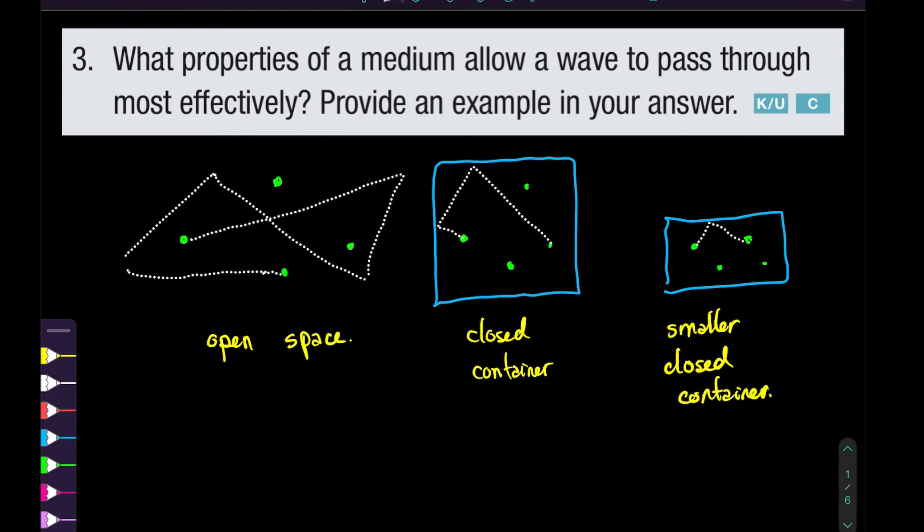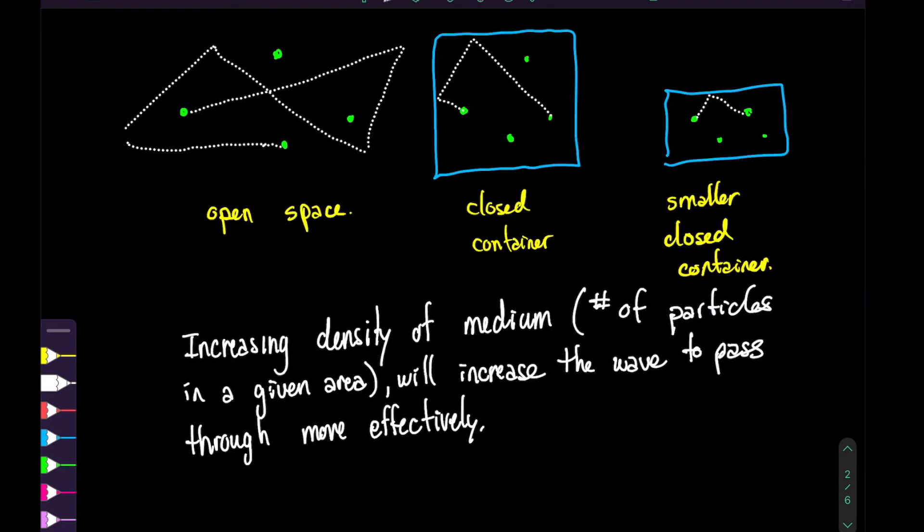One way to remember this is density, or the number of particles in a given area. If we increase the density of the medium, which is the number of particles in a given area, this will increase the wave to pass through more effectively because we increase the number of collisions. Whenever a collision occurs, that kinetic energy is transferred. This energy transfer is the wave.